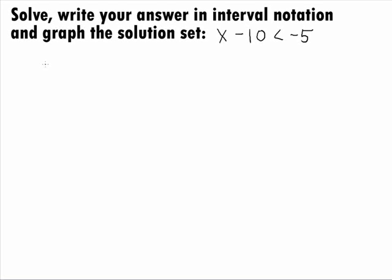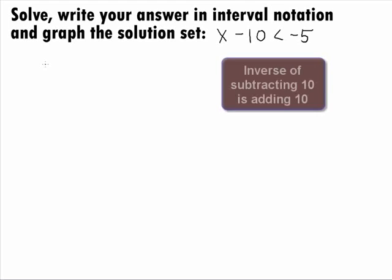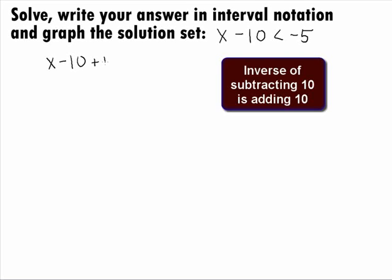In this problem, it looks like the only thing we need to move to the other side is the negative 10. The inverse of subtracting 10 is to add 10 to both sides. When we do this, we will get x minus 10 plus 10.